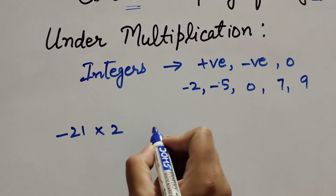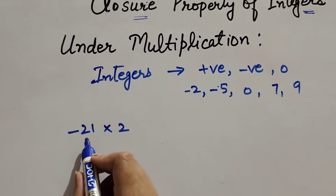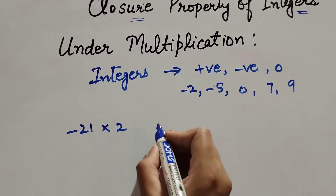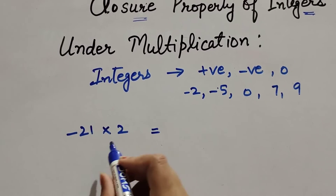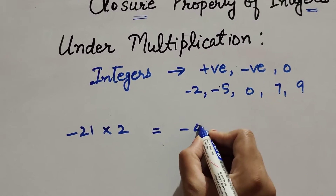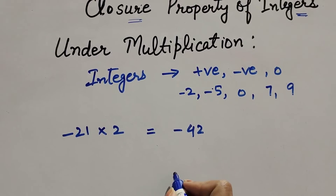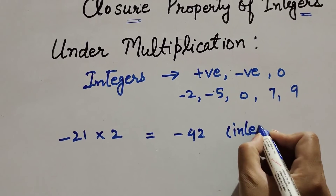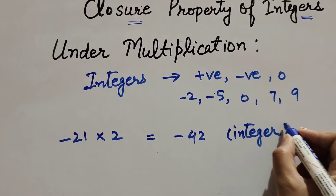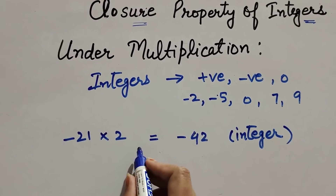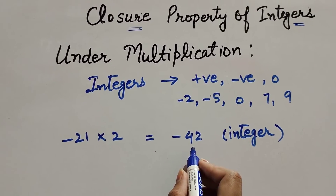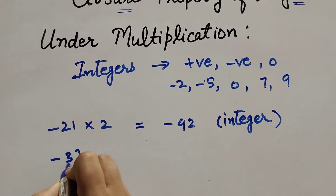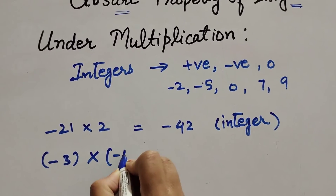Suppose minus twenty-one is multiplied by two. Minus twenty-one is a negative integer and two is a positive integer. When we multiply minus twenty-one by two, we get minus forty-two. So minus forty-two is also an integer. When we multiply a negative and a positive integer we get a negative integer.